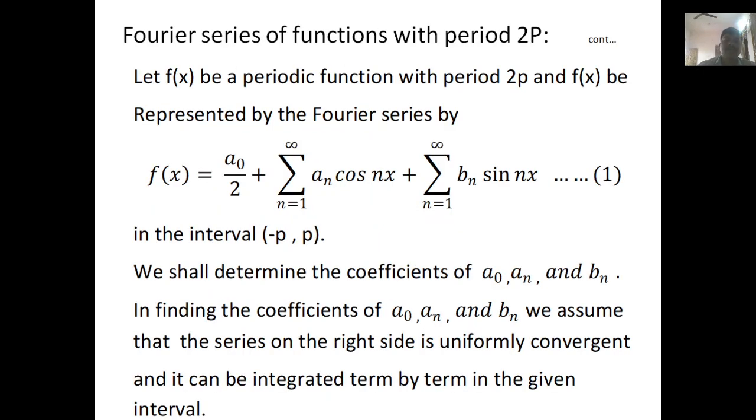Fourier series of functions with period 2P: Let f(x) be a periodic function with period 2P and be represented by the Fourier series f(x) = a₀/2 + Σ(n=1 to ∞) aₙcos(nx) + Σ(n=1 to ∞) bₙsin(nx) in the interval minus P to P. Here a₀, aₙ, and bₙ are Fourier coefficients.